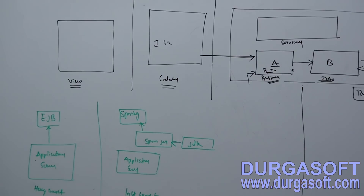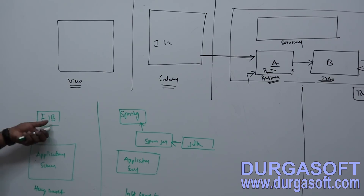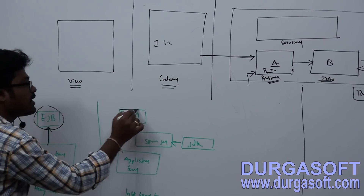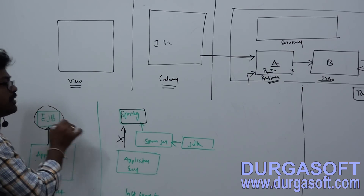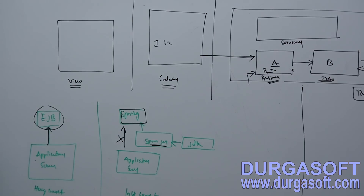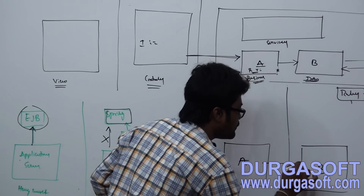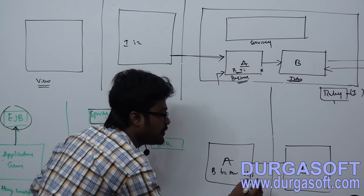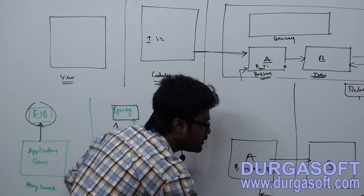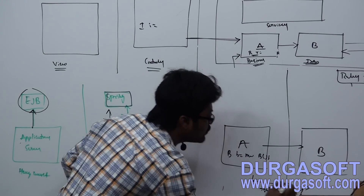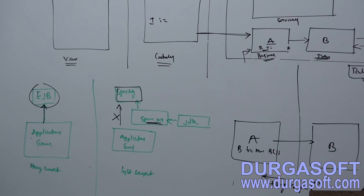Heavyweight means if your application has tight dependency on a platform or server, it is heavyweight. AWTs are heavyweight; Swings are lightweight. EJBs are heavyweight since they depend on an application server — without it, EJB classes can't execute. Springs are lightweight — without an application server, they can execute using simple JDK and Spring JAR files. Loosely coupled means two classes don't have tightly coupled dependency between them.